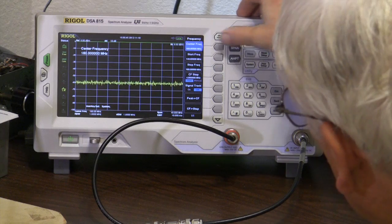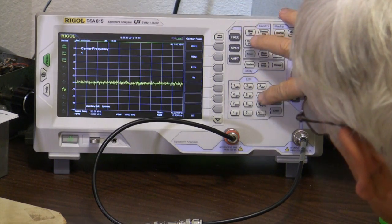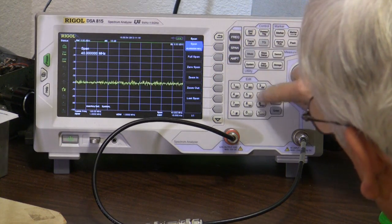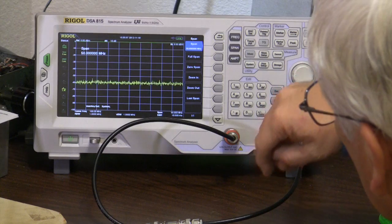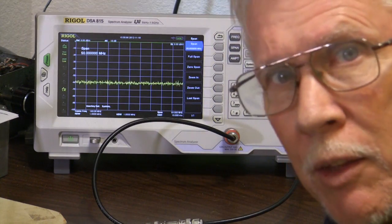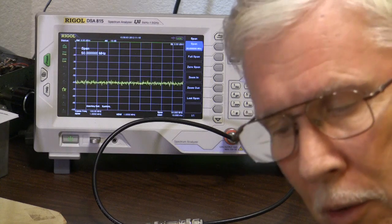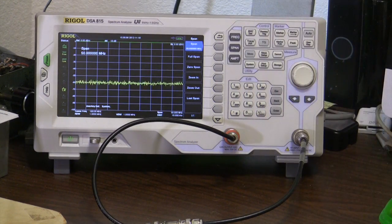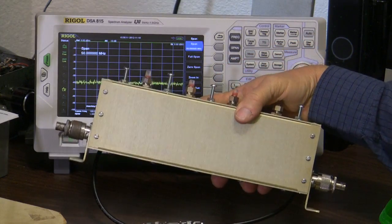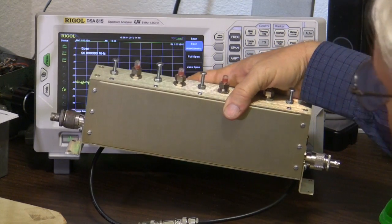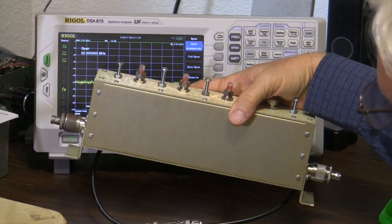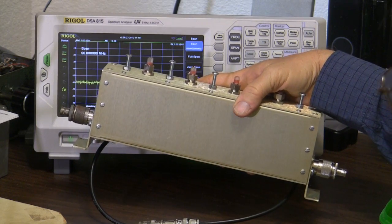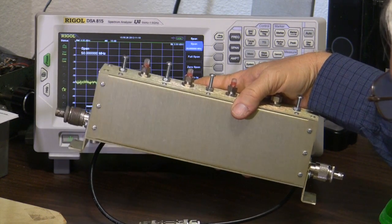They had it centered at 169. They had a span of 50 megahertz. So we'll do the same thing. So 169 frequency, center frequency, 169 megahertz. And then we'll do a span of 50 megahertz. So now we have exactly the same thing that they had when they did their evaluation of this unit. Now, this thing has been kicking around for a while. It's actually 2004 or something like that that this was made.